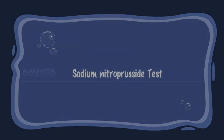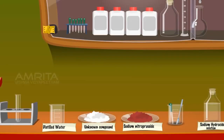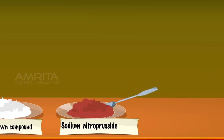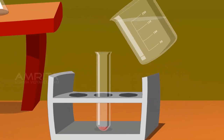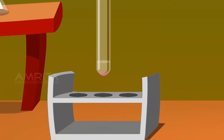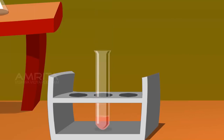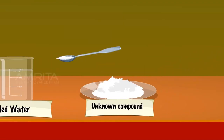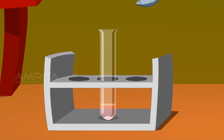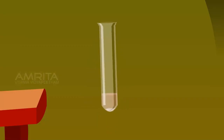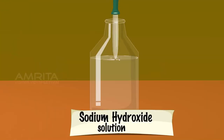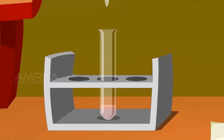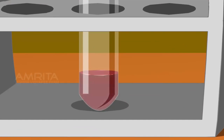Sodium nitroprusside test. Procedure: Take some crystals of sodium nitroprusside into a test tube. Add some distilled water and shake the test tube well. Take a small amount of the given compound using a spatula and add it into the test tube. Shake well. Add some drops of sodium hydroxide solution. The anion of the ketone formed by the alkali reacts with the nitroprusside ion to form a red coloured complex.